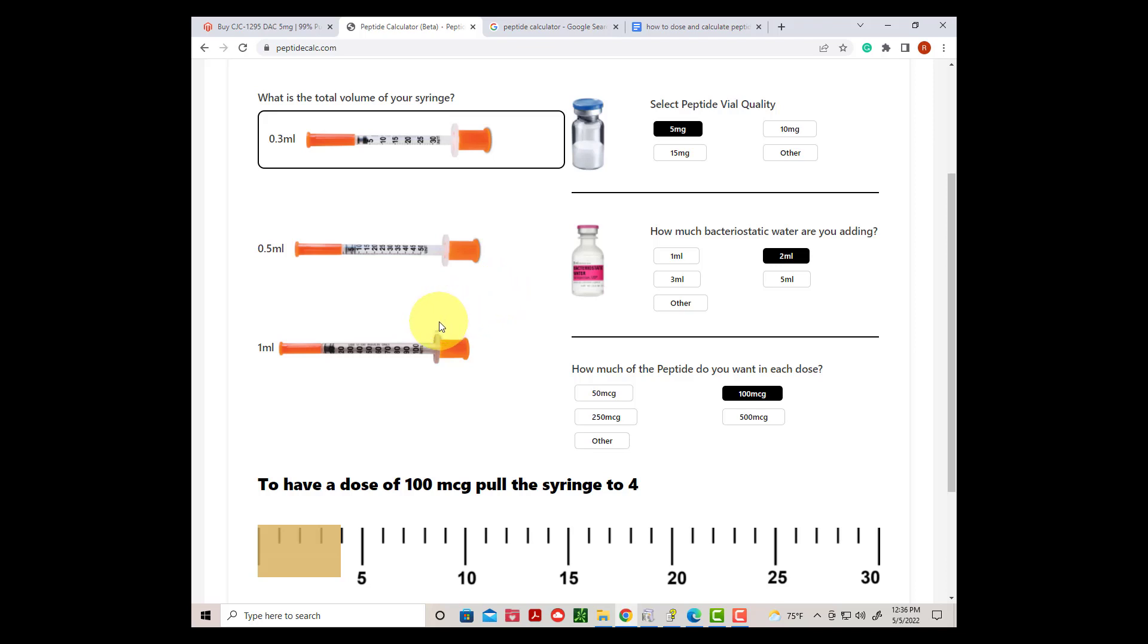The next thing we select is the size in milligrams that the peptide vial contains, in this case five milligrams.